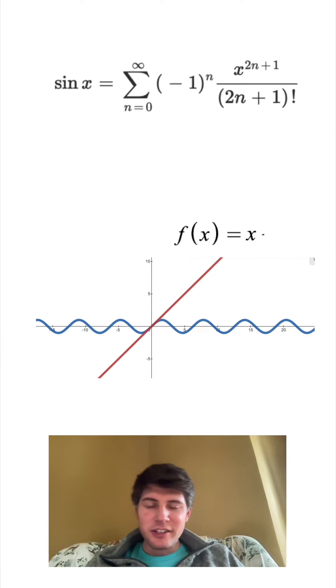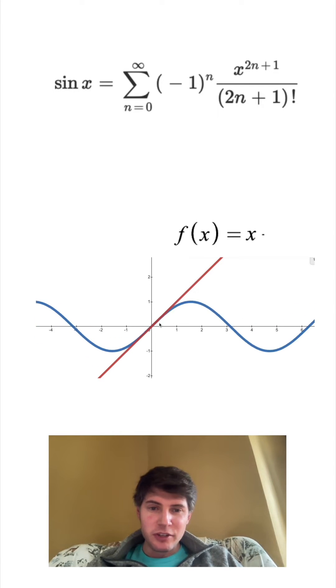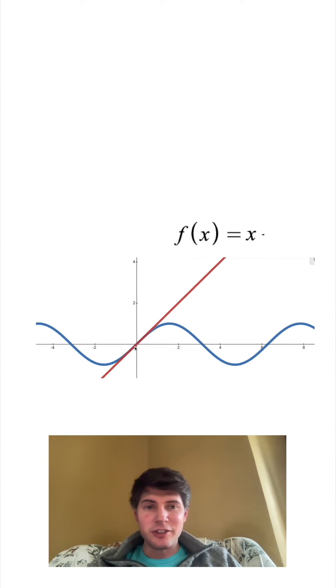Here's the graph of sine of x. Here's the Taylor polynomial of just the first term, which is just x. And we can see if we zoom in really close to zero, it's actually pretty accurate. But if we start to zoom out,